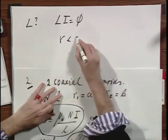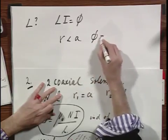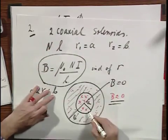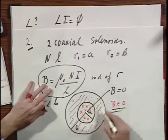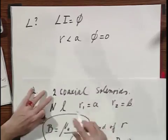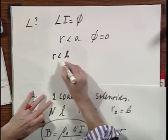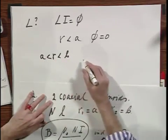When R equals less than A, the magnetic flux is obviously zero, because there is no magnetic field. And so the only magnetic flux that is non-zero is the one going through the annulus. So that is when R equals less than B and larger than A.